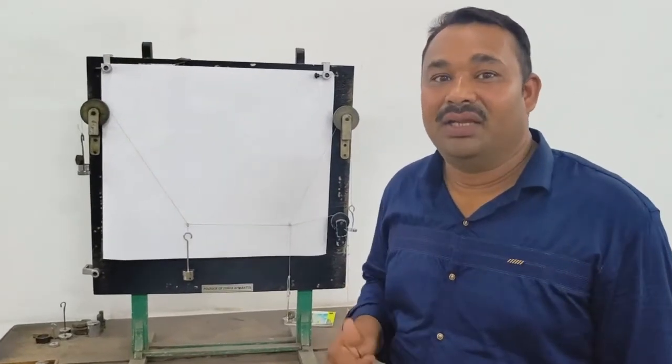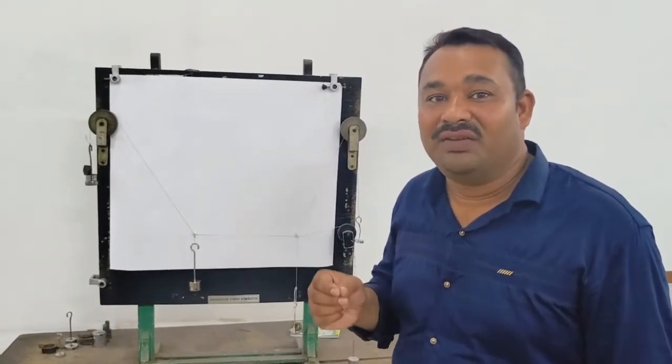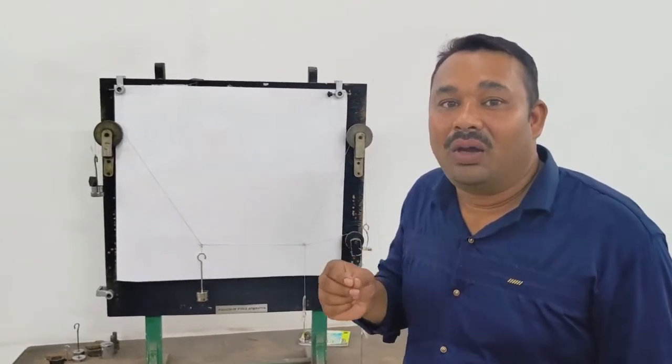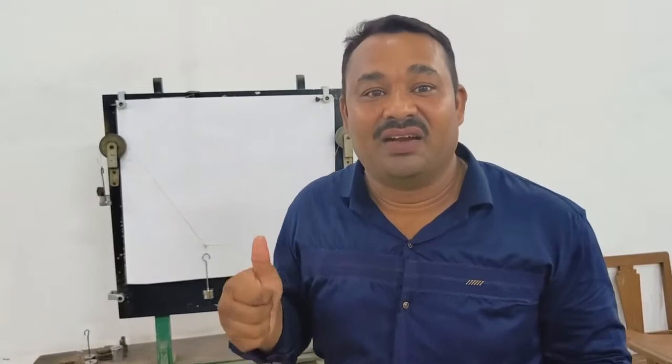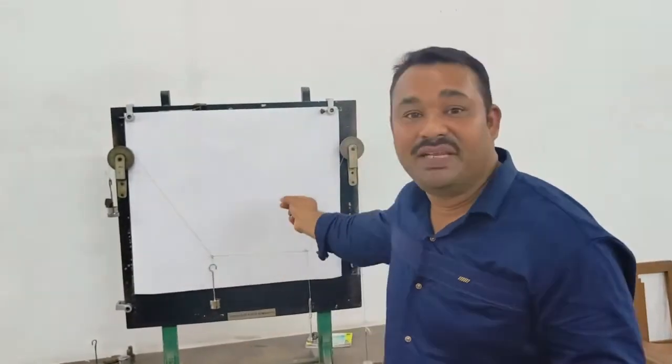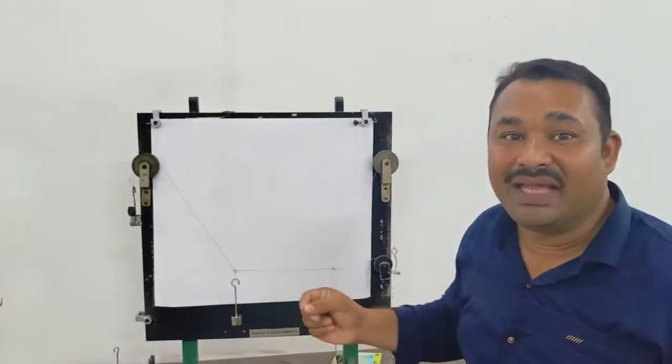The aim of the experiment is to verify the law of force polygons. When two forces are acting on the system, we have to use this method of verification. It is based on the graphical method.